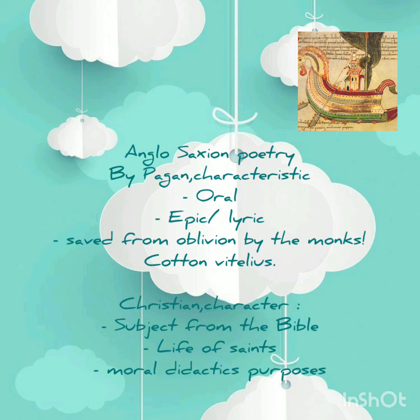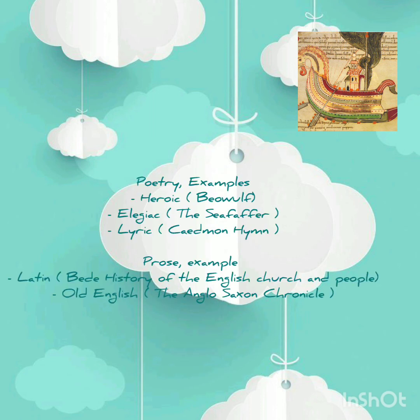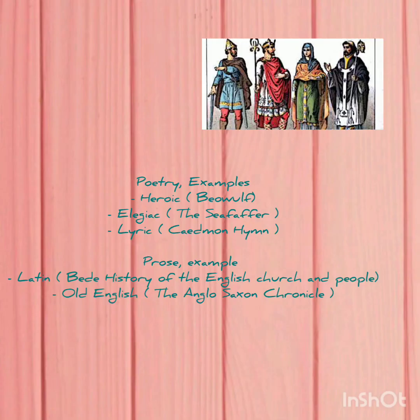Anglo-Saxon pagan poetry characteristics: oral, epic, and lyric — preserved from oblivion by monks. Christian poetry characteristics: subject matter from the Bible, lives of saints, and moral or didactic purposes. The poetry of the Anglo-Saxon period includes heroic works like Beowulf, elegies like The Seafarer, and lyrics like Caedmon's Hymn. Notable prose includes Bede's History of the English Church and People in Latin, and the Anglo-Saxon Chronicle in Old English.